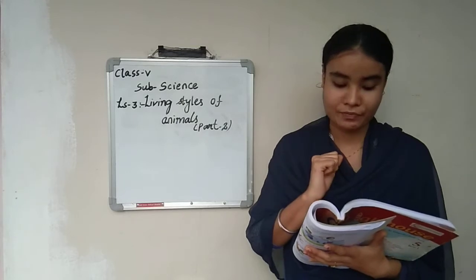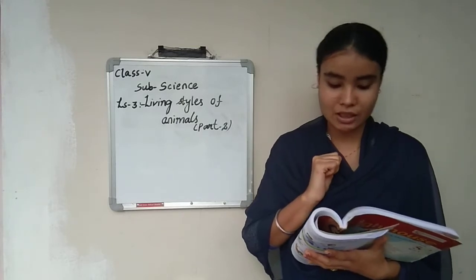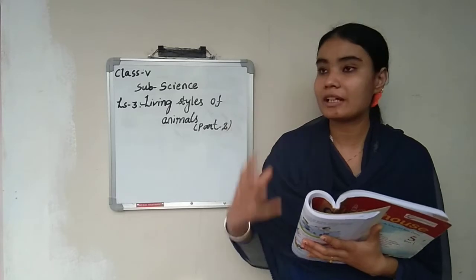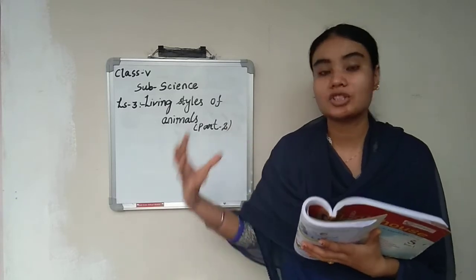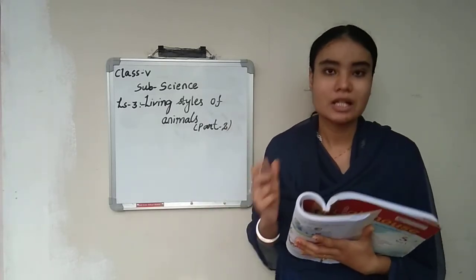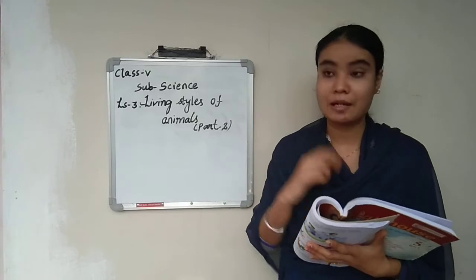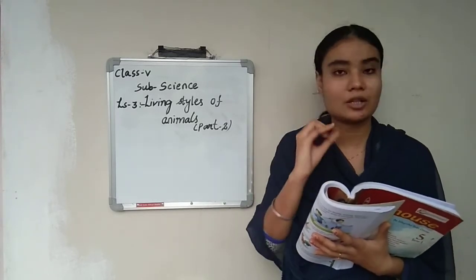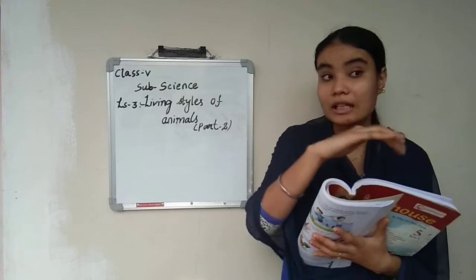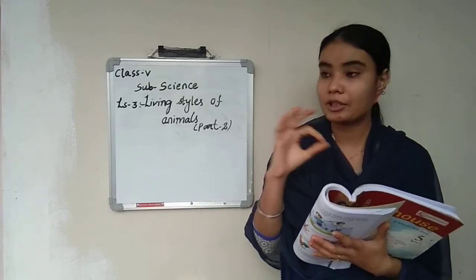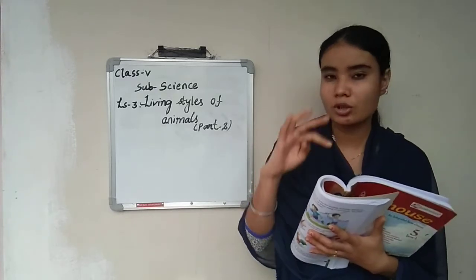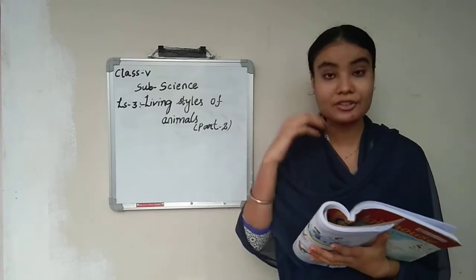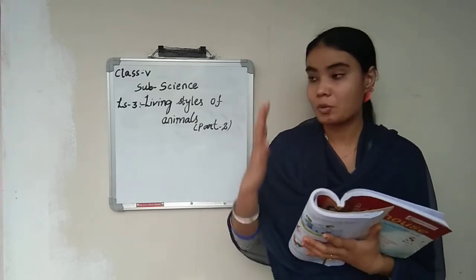Next is the kangaroo. Kangaroo can move only by jumping and hopping. It has strong hind legs, but with these legs the kangaroo cannot walk the way a cow or elephant walks, nor can it run like them. The kangaroo can only hop and jump from one place to another place.